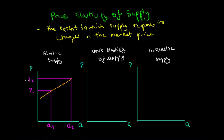As price increases, the quantity supplied increases by a proportionally larger amount for an elastic supply curve. The converse also holds, so that if the price decreases, the quantity supplied would also decrease from Q2 to Q1, and the decrease in quantity supplied is proportionally greater than the decrease in price.